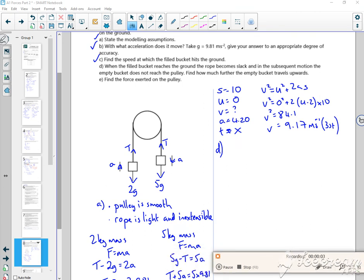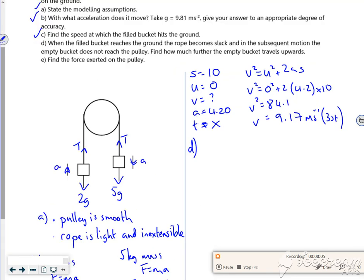Right, let's have a look at part D then. So it says, when the filled bucket reaches the ground, the rope becomes slack in a subsequent motion. The empty bucket does not reach the pulley. Find out how much further it travels up.